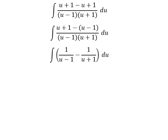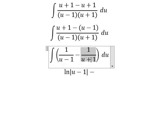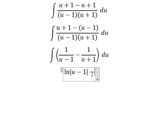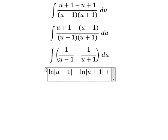Now the integration of the first term gives us ln of the absolute value of u minus one. The integration of the second term gives us ln of the absolute value of u plus one, and then we add the constant of integration C.